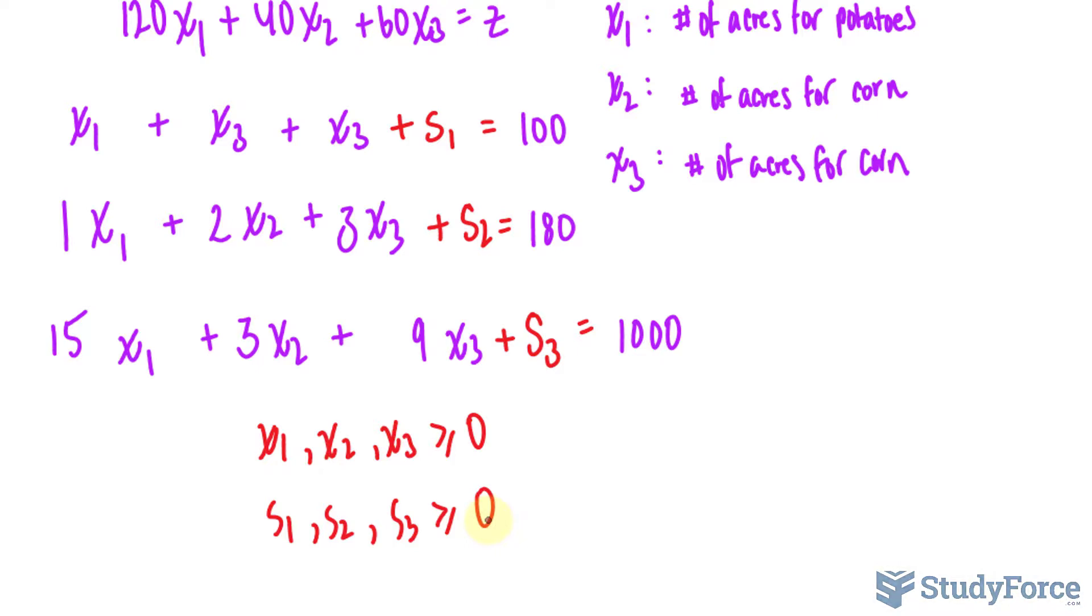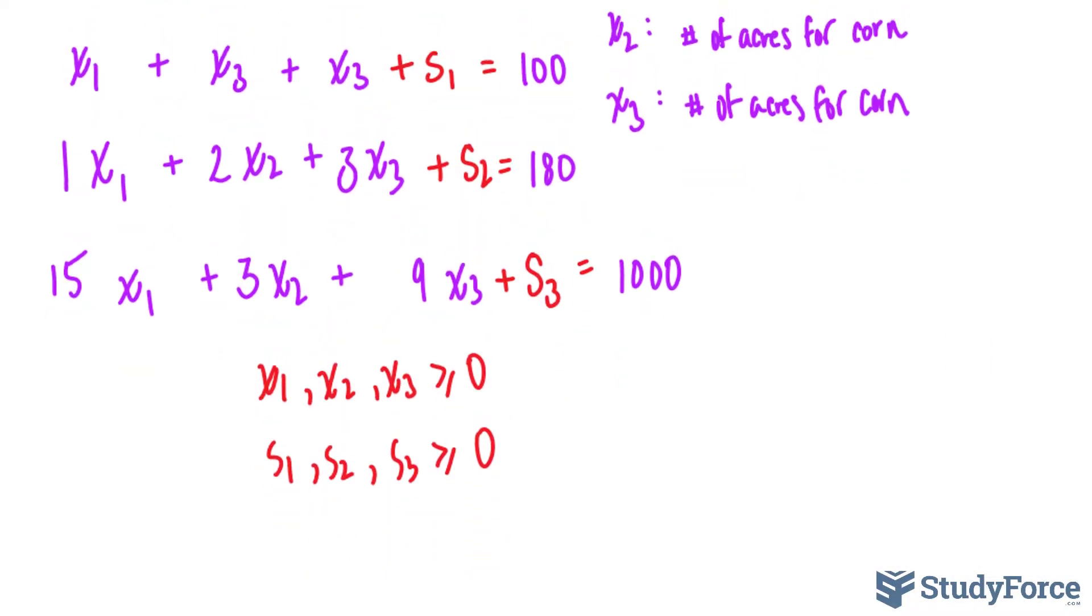The next step is to convert all of these equations into an augmented matrix, which we call the initial simplex tableau. So starting with our first constraint turned into equation, we'll write down the coefficients of each term. So 1, 1, 1, 1, so this column represents x sub 1, x sub 2, x sub 3, S sub 1. There is no S sub 2 or sub 3 in this equation, nor is there z. So you do need to report that, where you write down 0, 0, and 0, and the constant is 100.